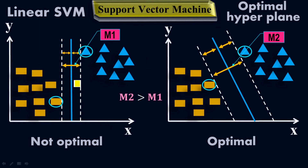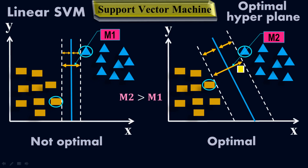Both models are support vector machine models, but the first model is not optimal — it is not good. The second model is the correct, optimal model with the optimal hyperplane. The maximum margin distance you have, the better your support vector machine model will be. So this second model is the best SVM model.